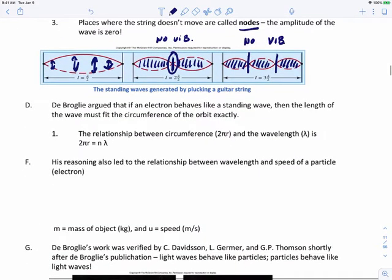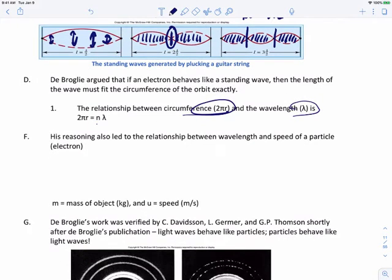De Broglie argued that if an electron behaves like a standing wave, then the length of the wave must fit the circumference of the orbit exactly. He came up with this relationship between the circumference 2πr and the wavelength λ. He said that the circumference is equal to n, the energy level, times λ, the wavelength.